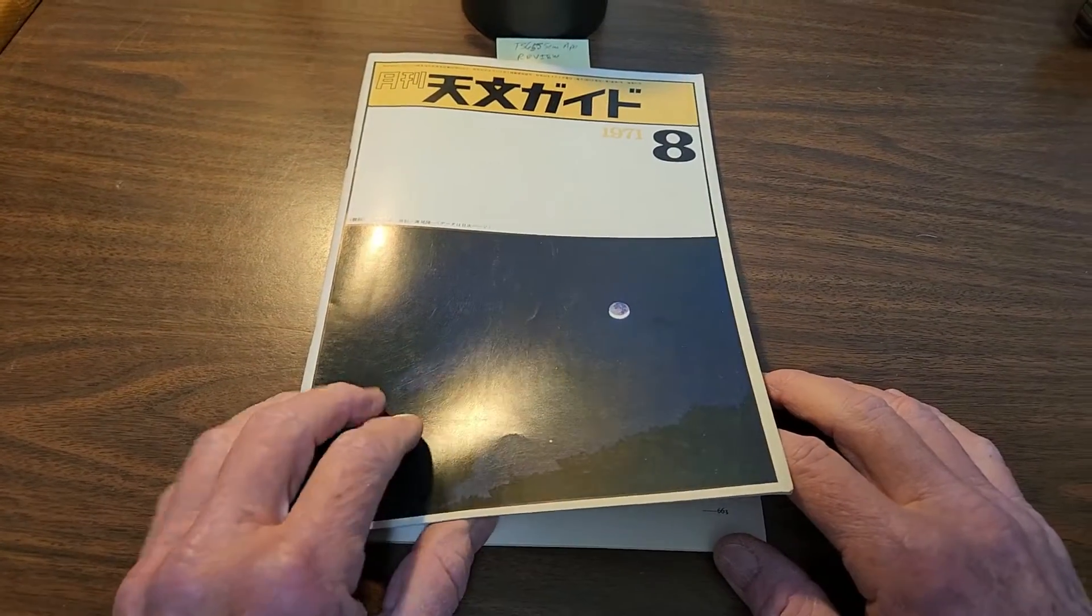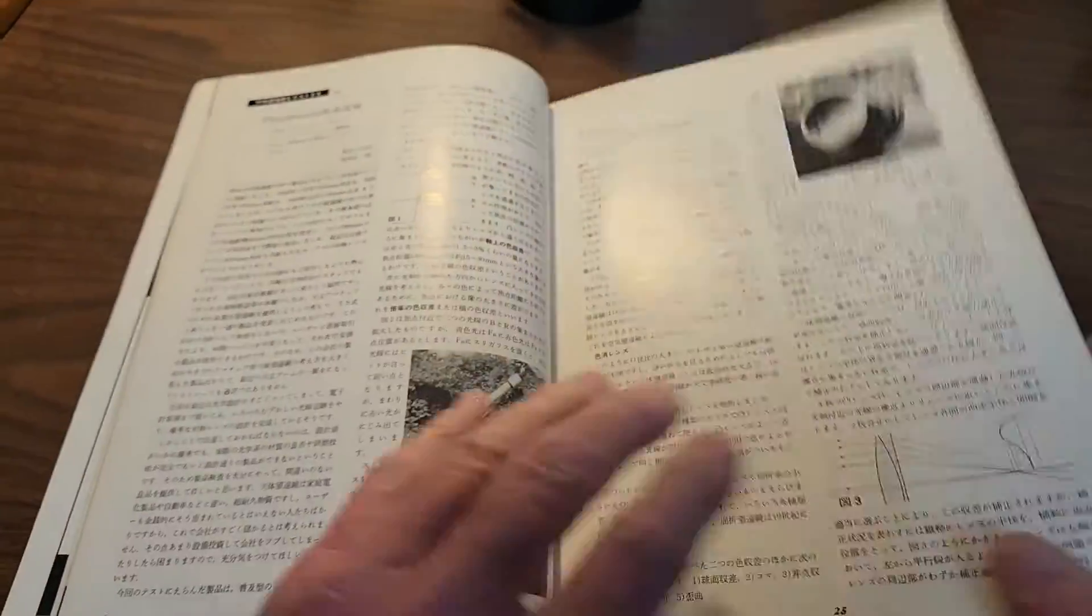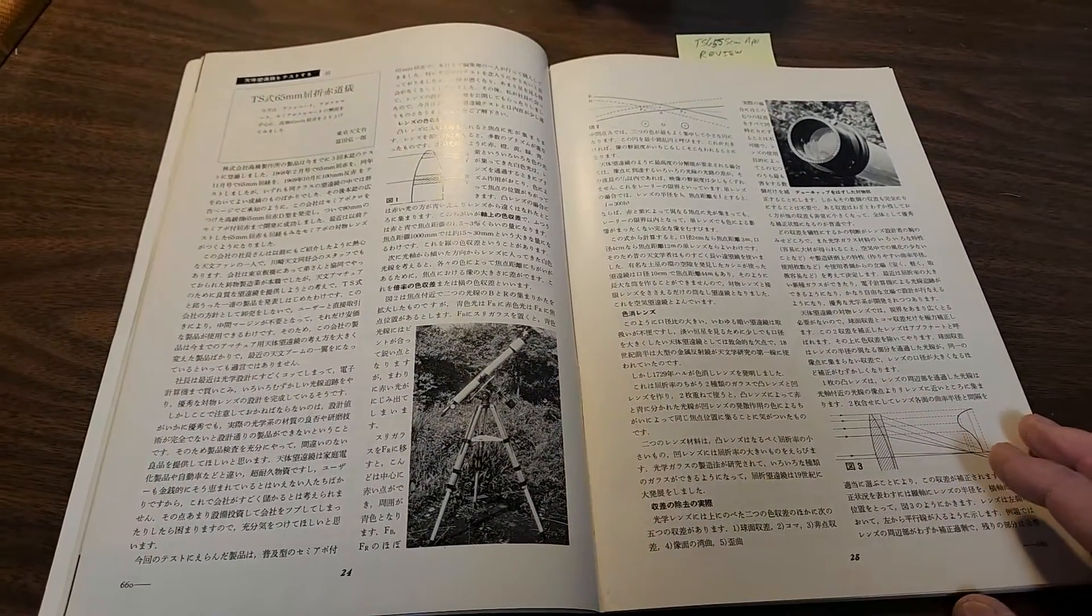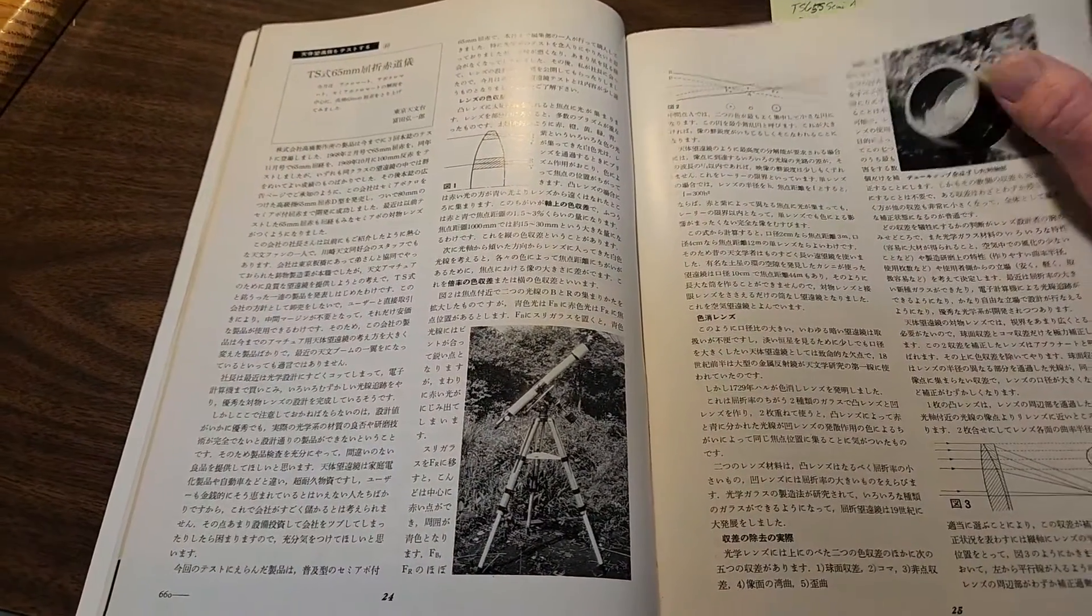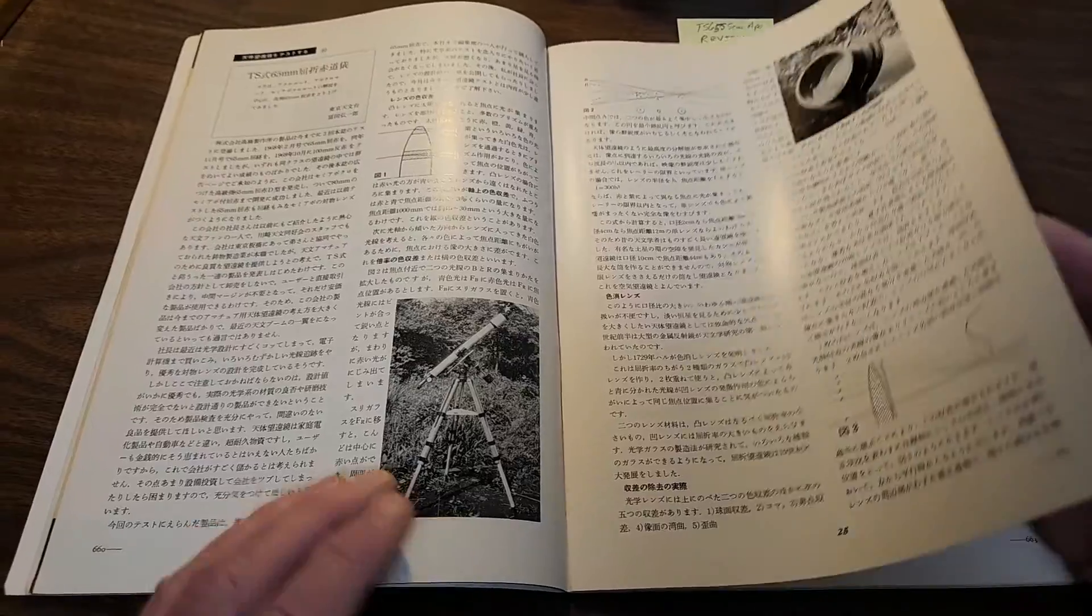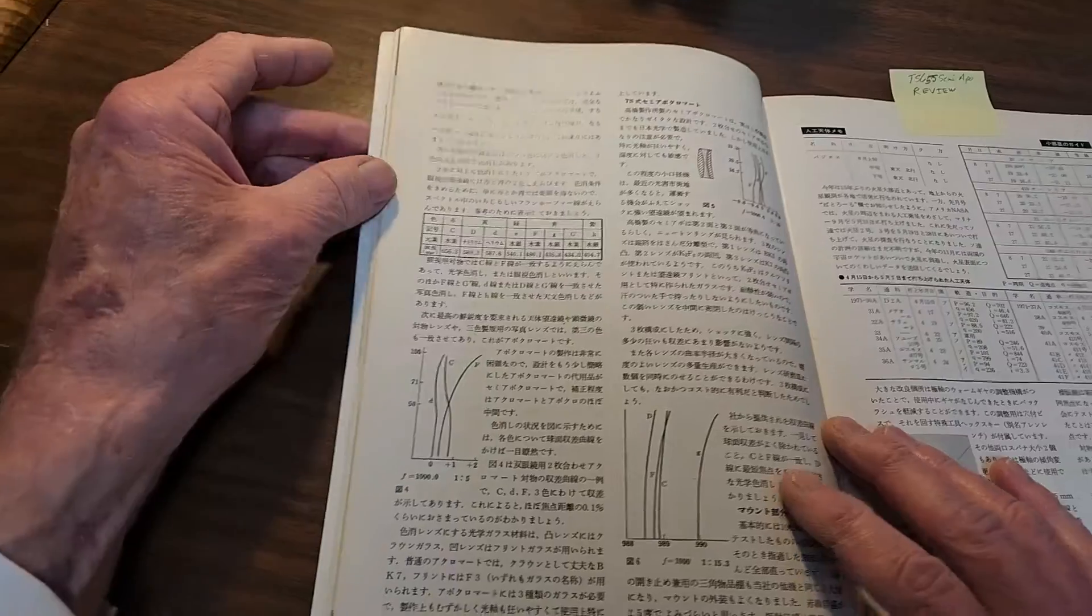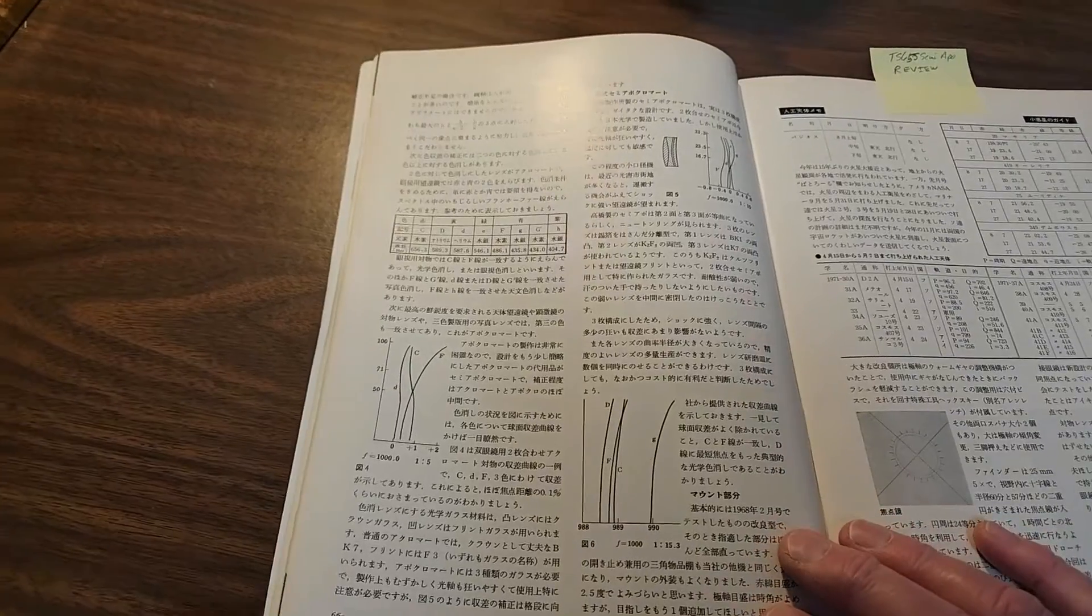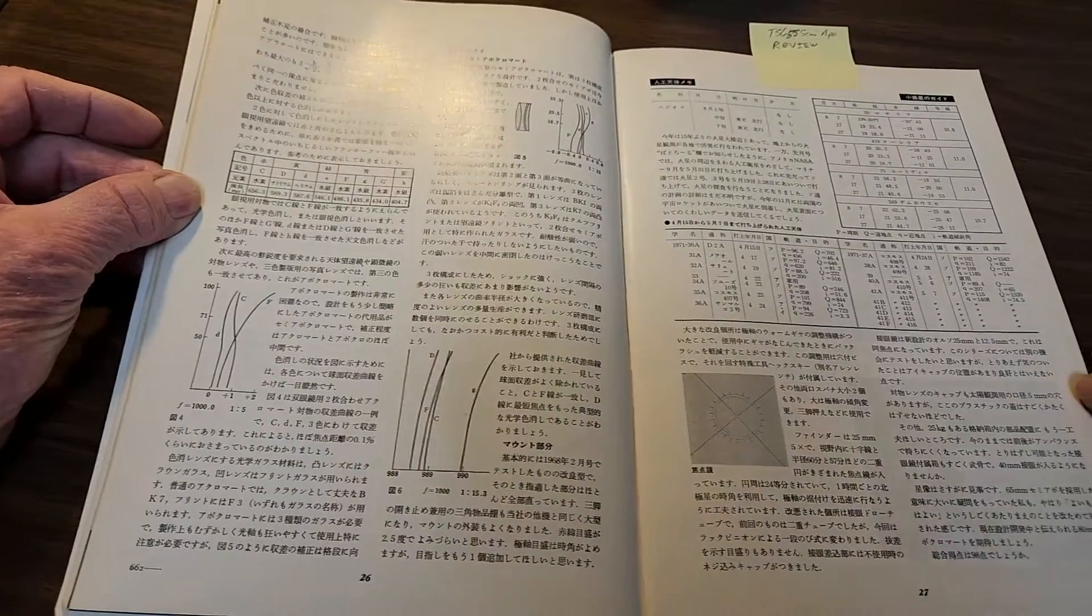August 1971. This is a review of the TS-65S model. Quite a detailed review, a lot of information here. I used Google Translate to try and translate it, but it was very difficult, especially since some of it is highly technical. Here's some discussion of the triplet semi-apochromat definitions about what that means and so forth. This is a much more detailed article than you'd ever see in Sky and Telescope.